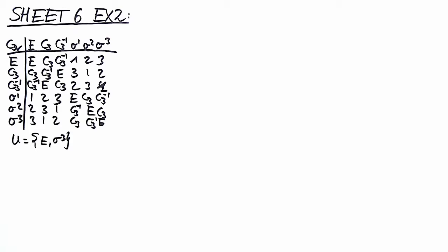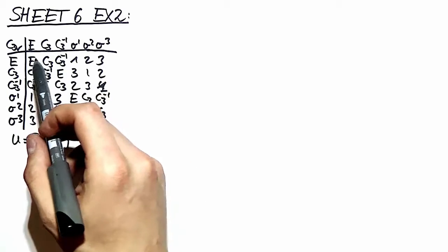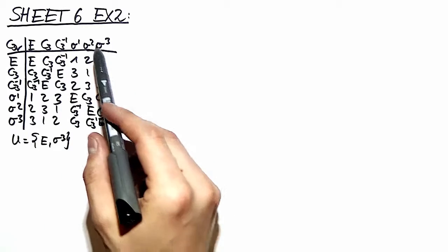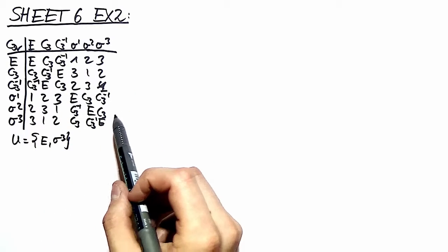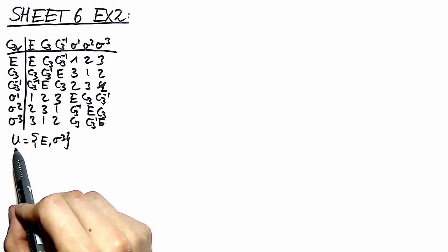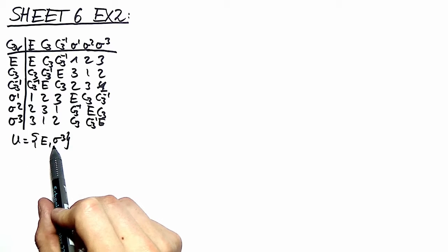In the first part of our exercise we want to show that left and right cosets do not need to be identical in general. We want to prove this for C3V. I wrote down the multiplication table over here — you've probably seen this before. If you don't, please go back in your notes and try to recover how you construct this multiplication table. Our subgroup of C3V consists of E and sigma3.